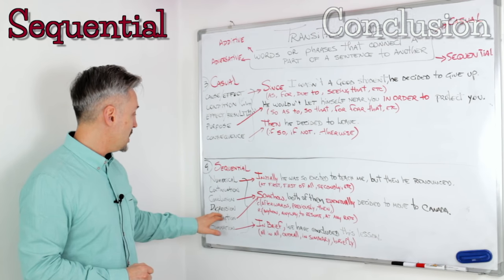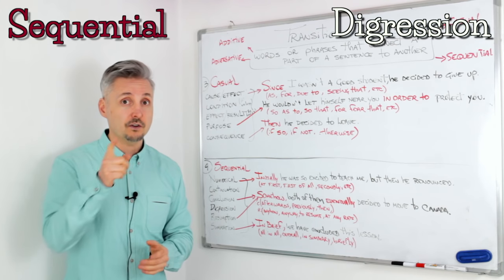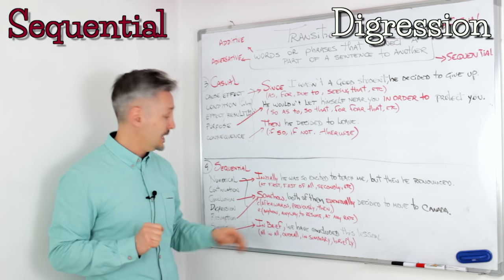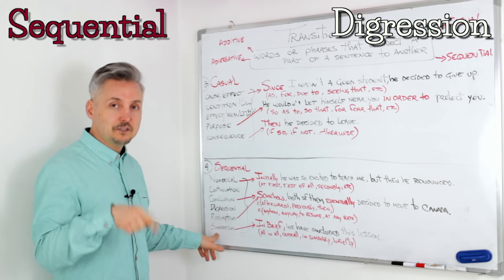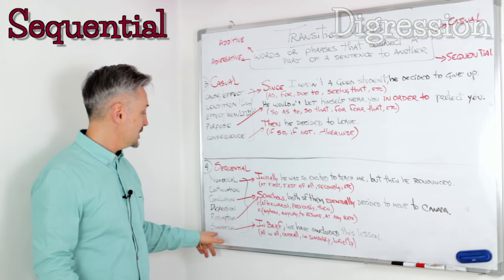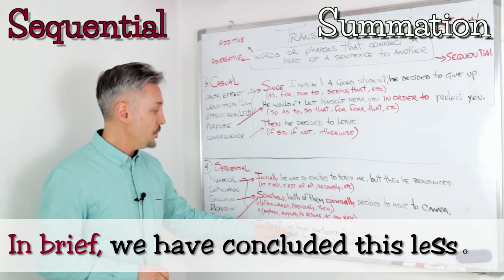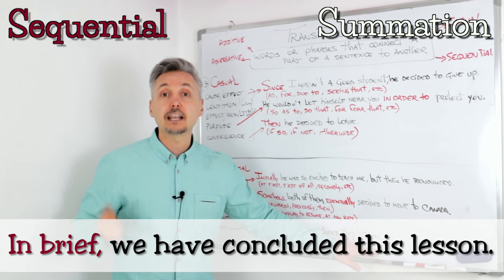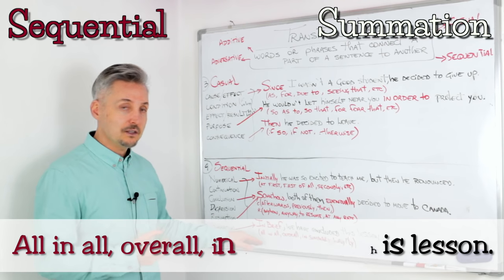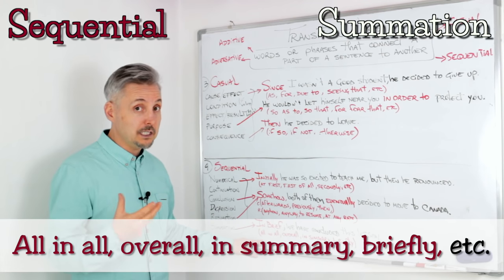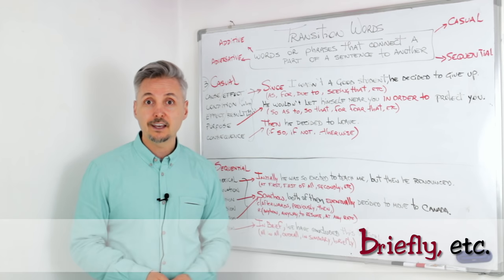For digression I don't have an example, so I expect you to write your own example in the comments. And for the last subgroup, summation, I do have an example: 'In brief, we have concluded this lesson.' 'In brief' can be replaced with 'all in all,' 'overall,' 'in summary,' 'briefly,' etc.